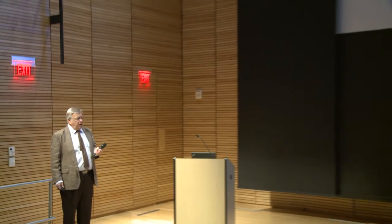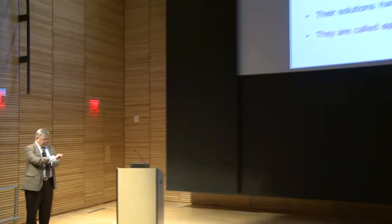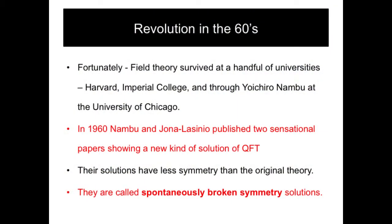These ideas survived at a few places: Harvard, Imperial College in London, and the University of Chicago. At the University of Chicago, a man by the name of Nambu, with another fellow by the name of Yona-Lasinio, had a brilliant idea about a new way to calculate.